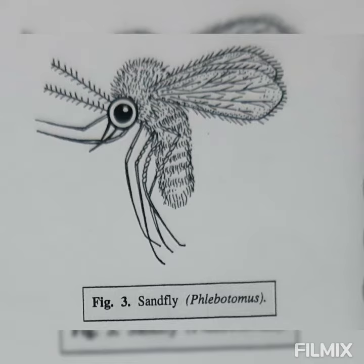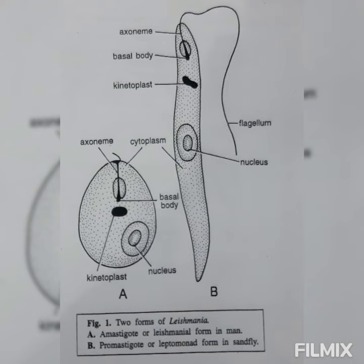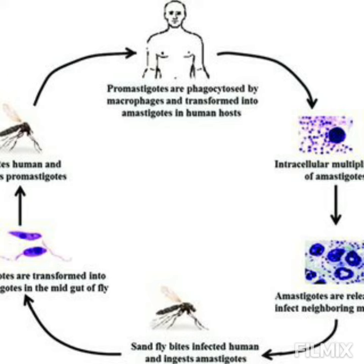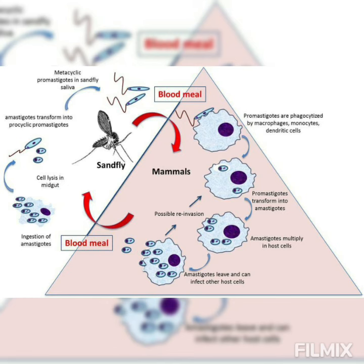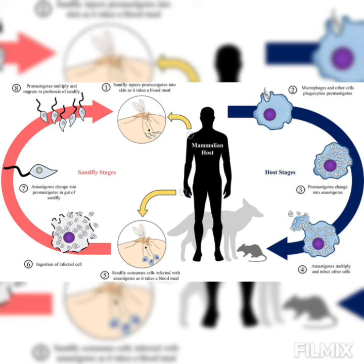The insect vector, which has fed on some suitable fruit or plant juice after an infected human blood meal, shows an enormous number of parasites in its buccal cavity and pharynx. The salivary glands of the vector are not involved, as in the case of the tsetse fly transmitting trypanosomes. When such a sandfly bites a man, it liberates the parasites in the skin wound caused by its proboscis.